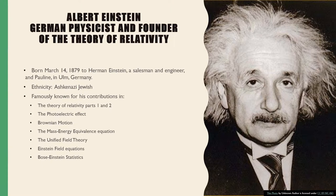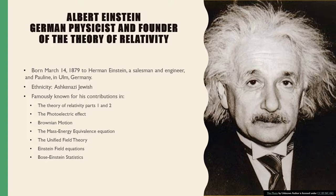Albert Einstein, German physicist and founder of the theory of relativity. He was born March 14, 1879 to Hermann Einstein, a salesman and engineer, and Pauline in Ulm, Germany. His ethnicity is Ashkenazi Jewish and he is famously known for his contributions in the theory of relativity parts one and two, the photoelectric effect, the Brownian motion, the mass-energy equivalence equation, the unified field theory, Einstein field equations, and Bose-Einstein statistics.